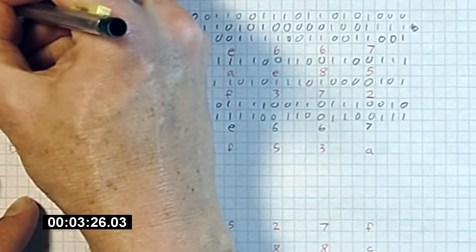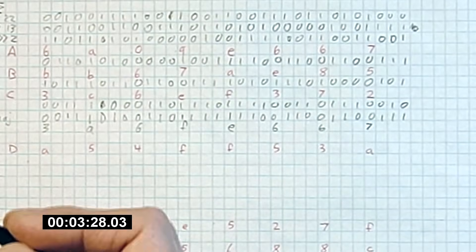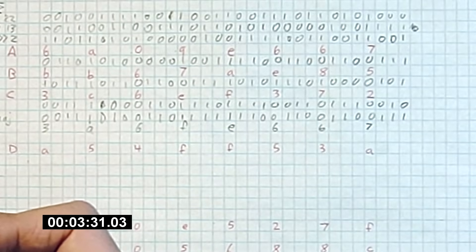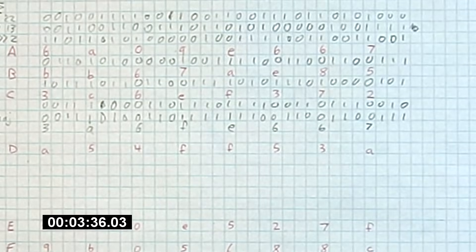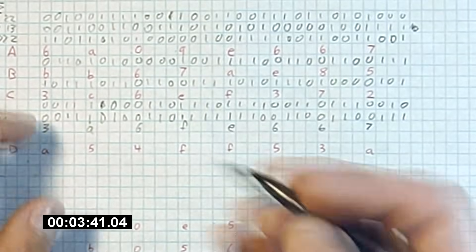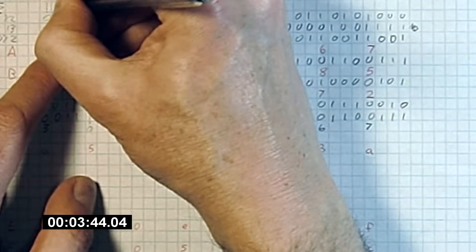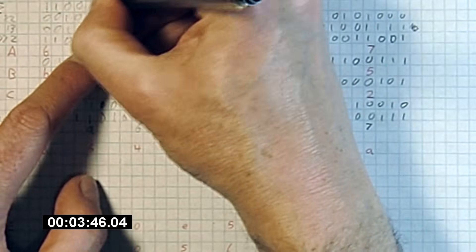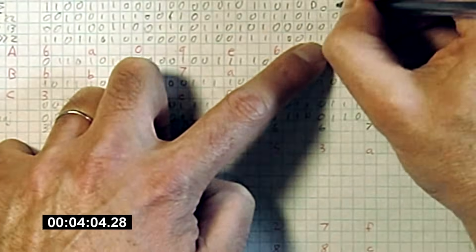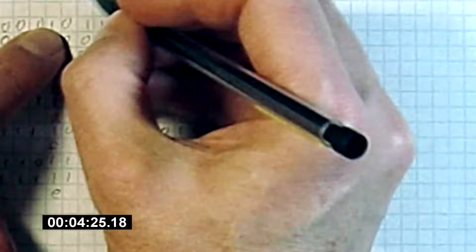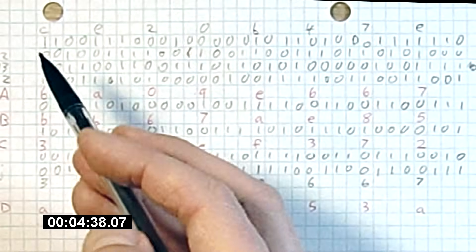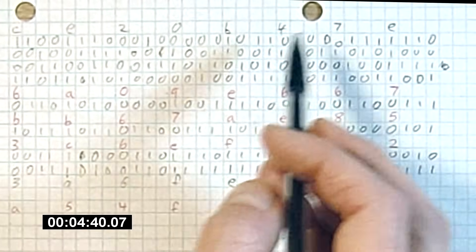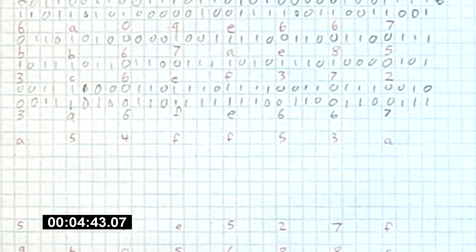Now we sum these three shifted values modulo 2 — that is, we XOR the three bits together. The easiest way to think of it: if there's an odd number of ones we put a 1; if there's an even number of ones we put a 0. The result of our summation is CE20B47E.